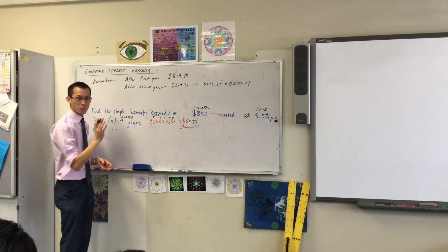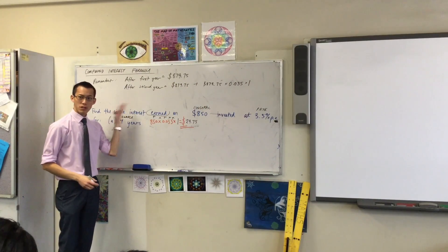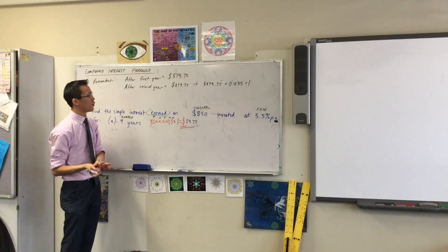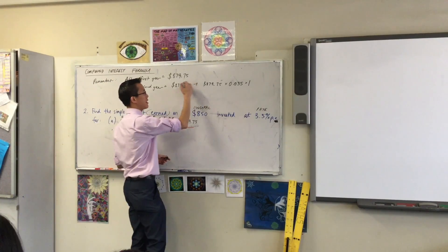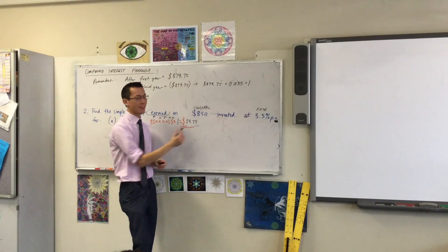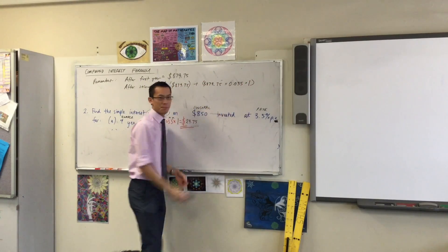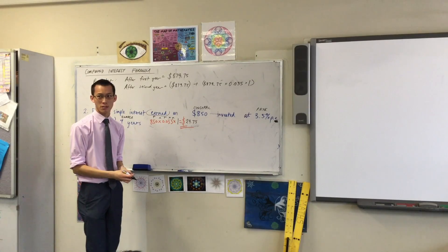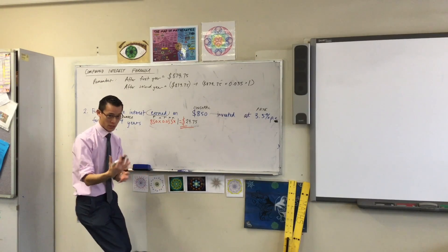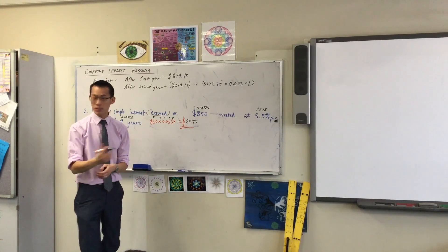Now, before you go ahead and you press the answer, I want you to notice, as we've seen in algebra before, there's a common factor between these two things. Do you notice that? There's the first term over here and there's the second term over here, but there's a huge common factor in between both of them, which is the $879.75, right? The principal.